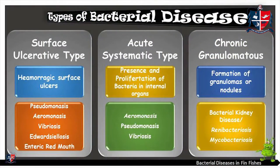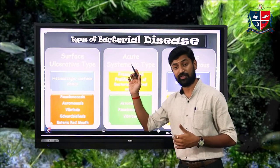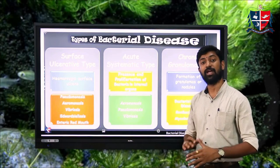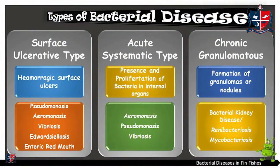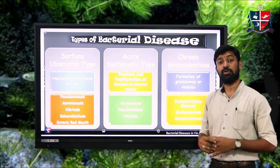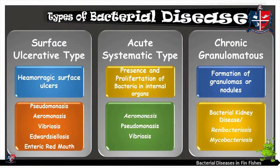The surface ulcerative type is characterized by hemorrhaging surface ulcers in fin fishes. The acute systematic type is characterized by the presence and proliferation of bacteria in the internal organs. The chronic granulomatous type is characterized by the formation of granules or nodules due to the colonization of bacteria.